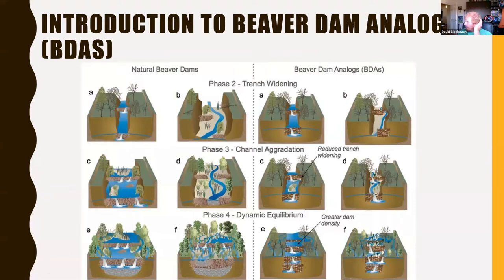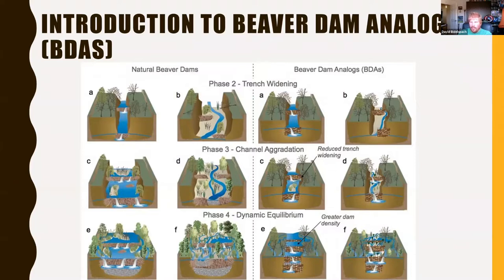It's the same idea as a priority one restoration, except there is no consideration given to what the channel dimension needs to be — it's literally just changing the bed profile. There's no consideration of what the plan form needs to be, other than the fact that when you raise up the water high enough, new flow paths will be found and that will change the plan form as well.